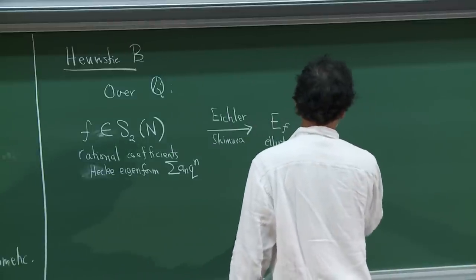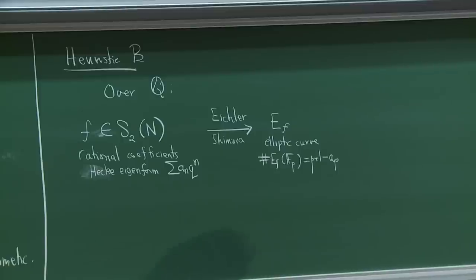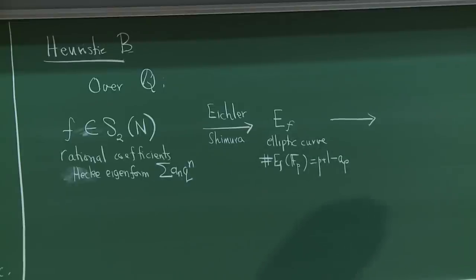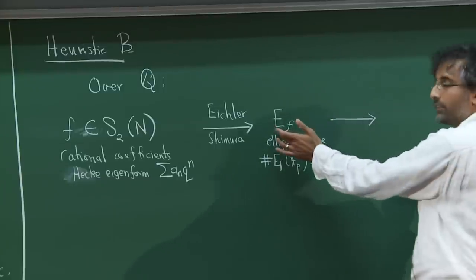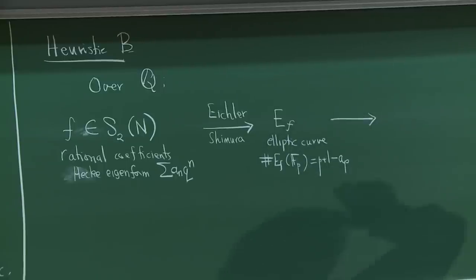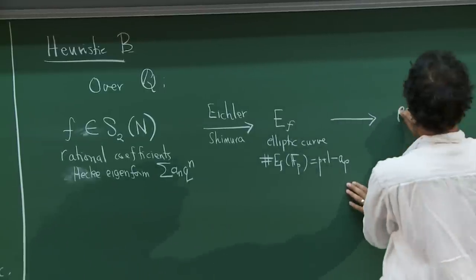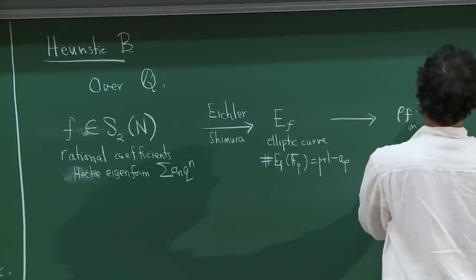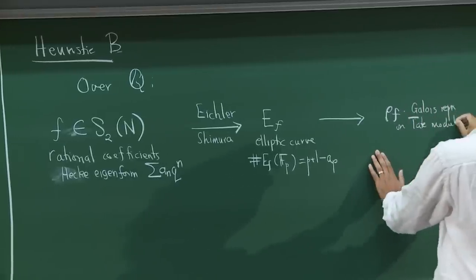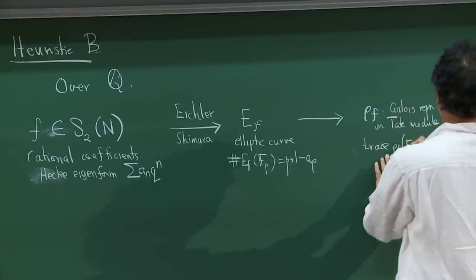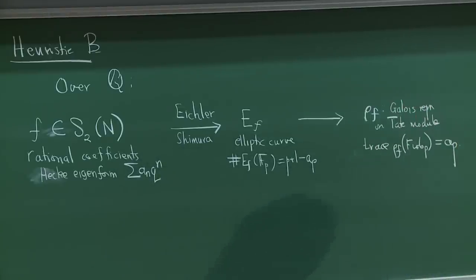You don't even have to remember the full elliptic curve — one can just remember the Galois representation on the Tate module. This Galois representation has the property that its traces on Frobenius elements are related to the a_p's. That's the story over Q. Now let me say the corresponding story over our imaginary quadratic field.